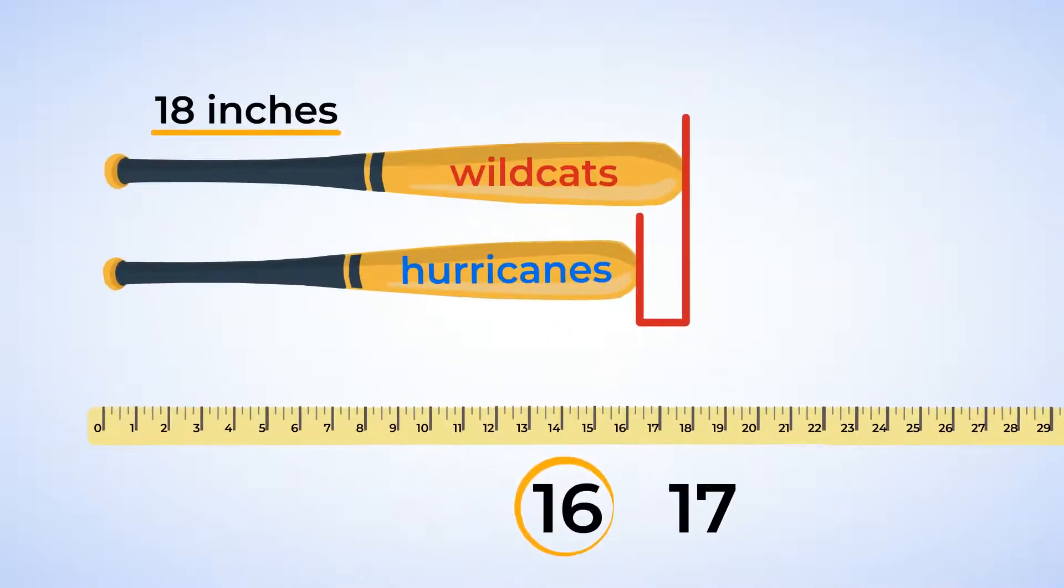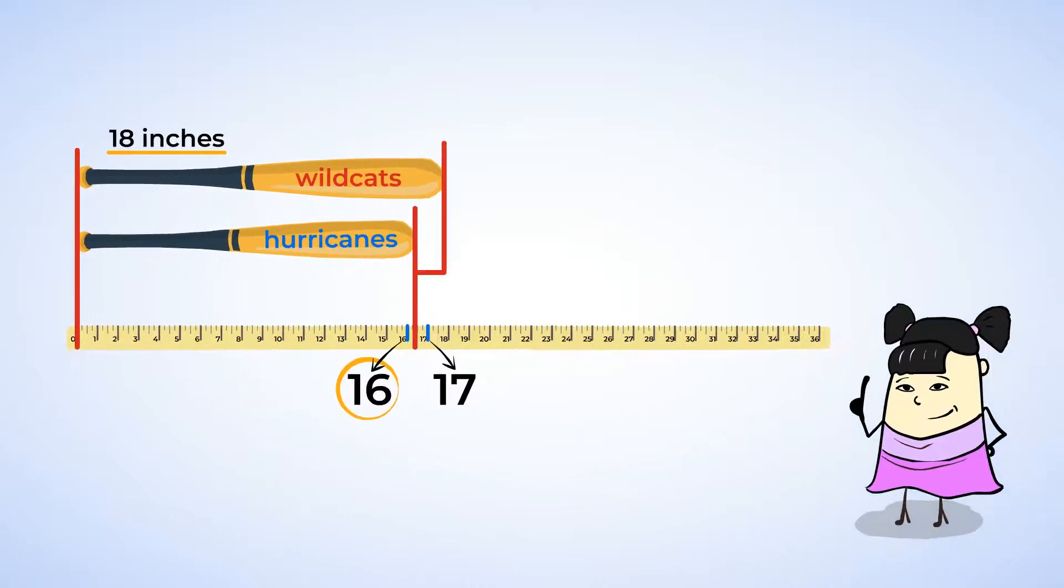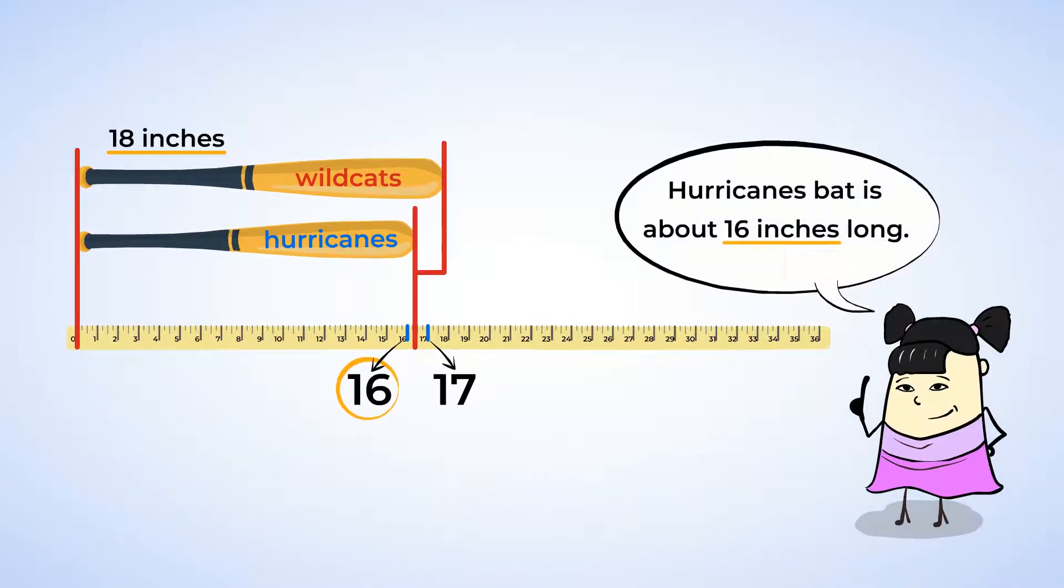Now, time to measure. Nice estimating! It seems like the Hurricanes bat is between 16 and 17 inches long, but it is closer to 16 inches. So we can say that it is about 16 inches long. That was our estimation. You've done a really good job with estimating today.